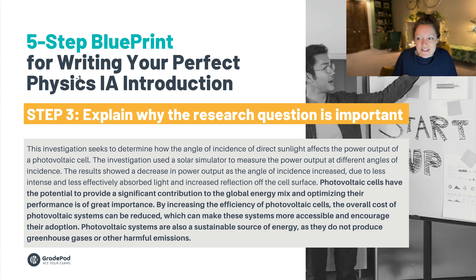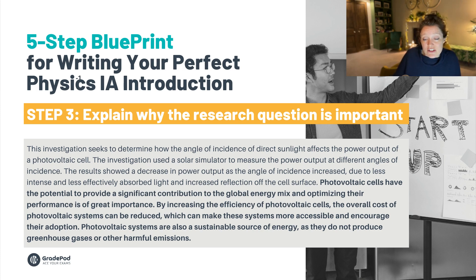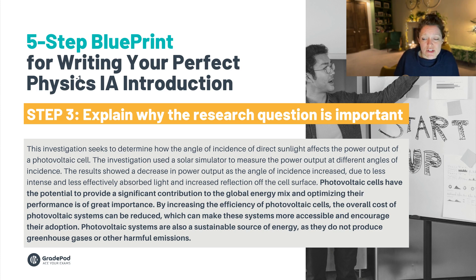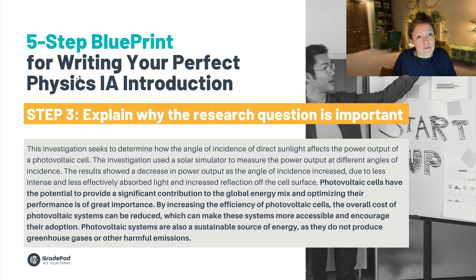Step three is to explain why the research question is important. This is where you take your research question and relate it to the wider world — nothing too lengthy. I've added: 'Photovoltaic cells have the potential to provide a significant contribution to the global energy mix and optimizing their performance is of great importance. By increasing the efficiency of photovoltaic cells, the overall cost of photovoltaic systems can be reduced, which can make these systems more accessible and encourage their adoption. Photovoltaic systems are also a sustainable source of energy as they do not produce greenhouse gases or other harmful emissions.' I've related improving power output to real-world efficiency and sustainability, though I think it's slightly too wordy.